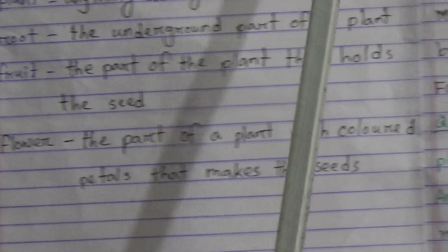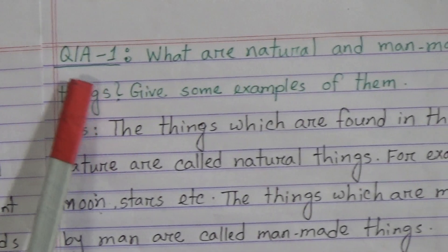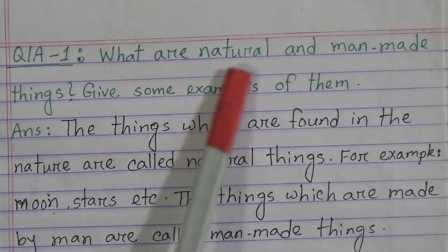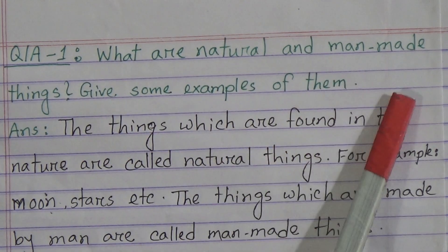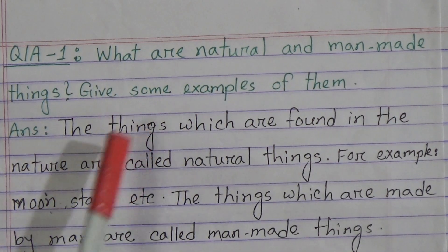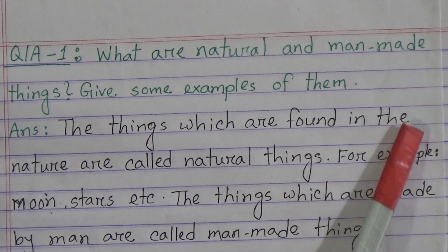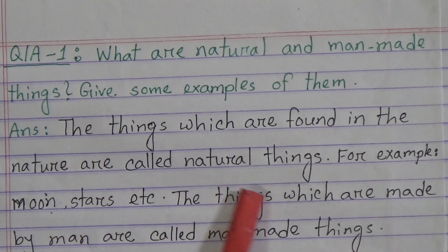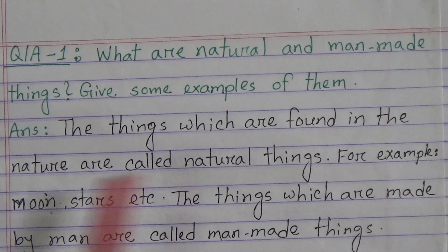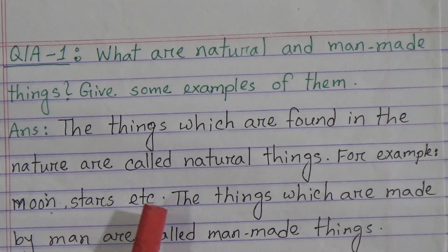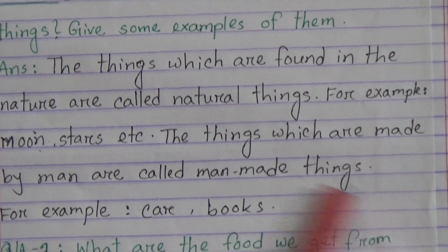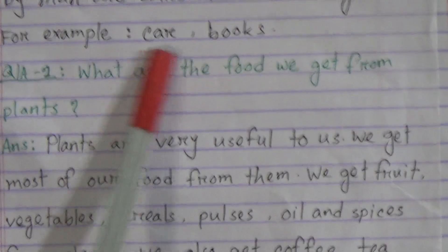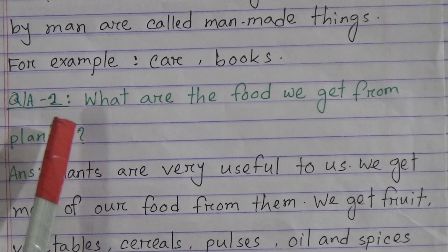My dear students, now come to question answer. Question answer number 1: What are natural and man-made things? Give some examples of them. The things which are found in the nature are called natural things. For example, moon, stars, etc. The things which are made by men are called man-made things. For example, car, books, etc.